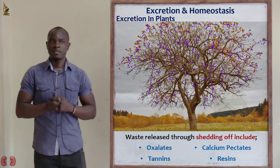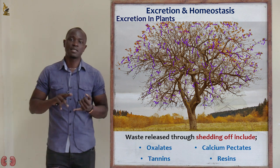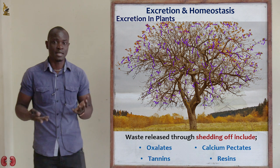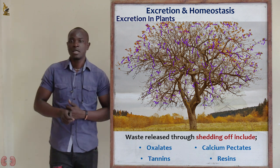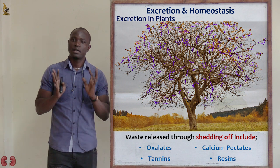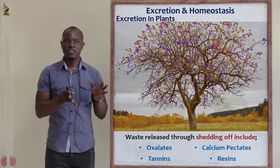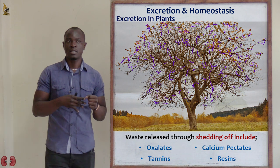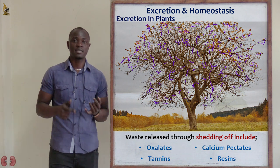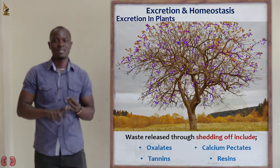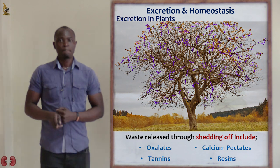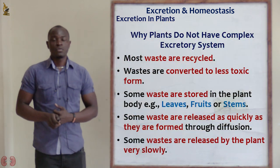Some specific waste products excreted by plants include calcium pectate, oxalates, resins, and tannins, among others. These are examples of waste products that plants release through this shedding mechanism.